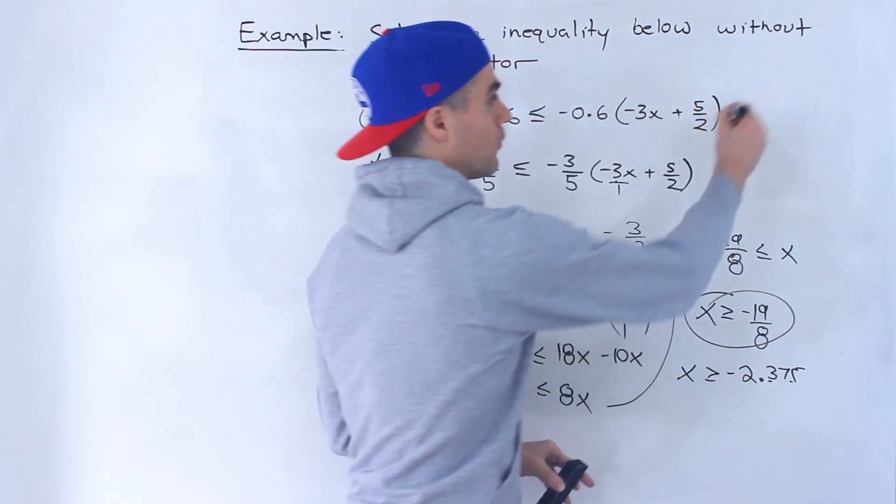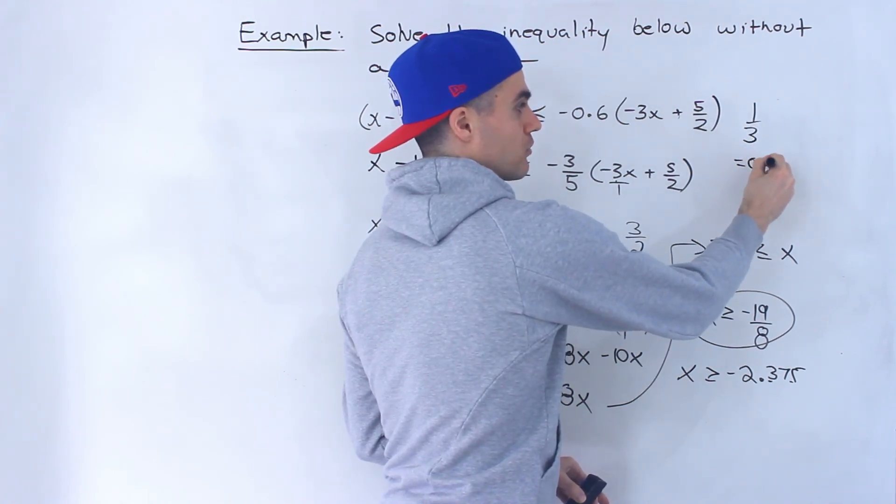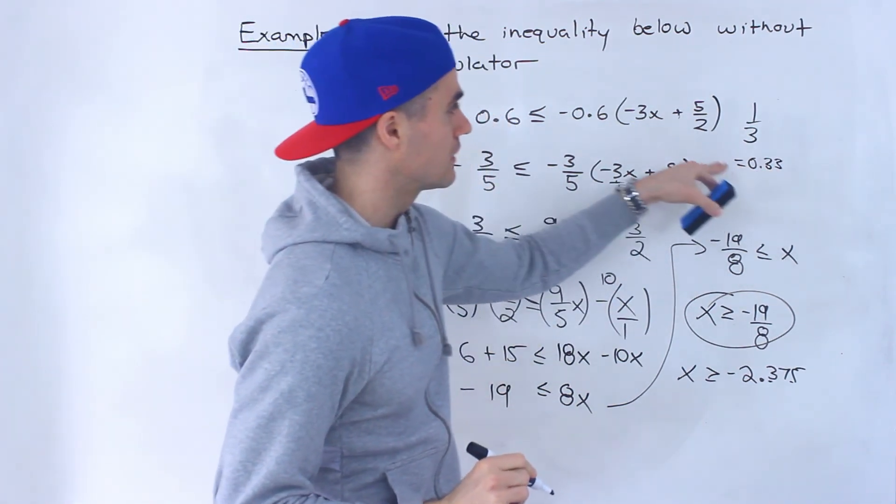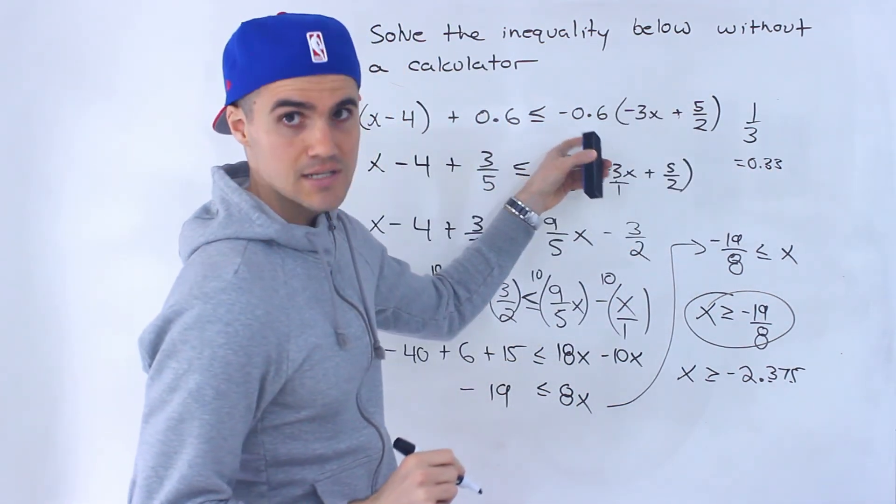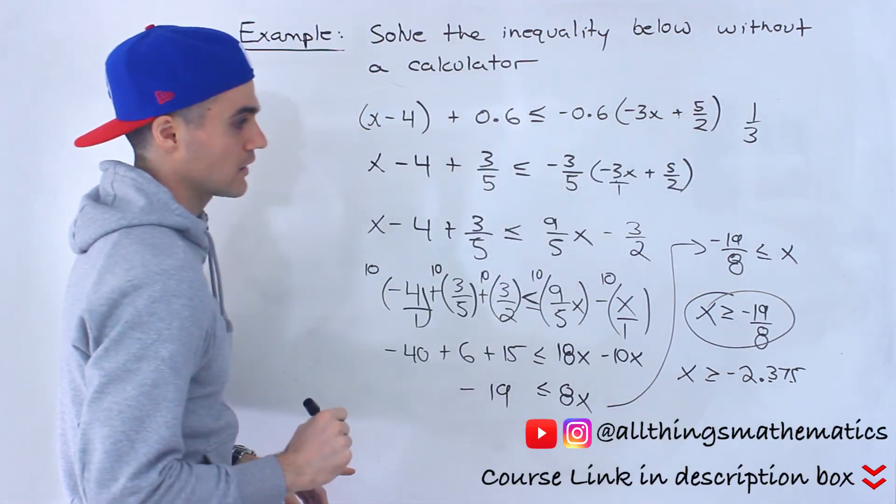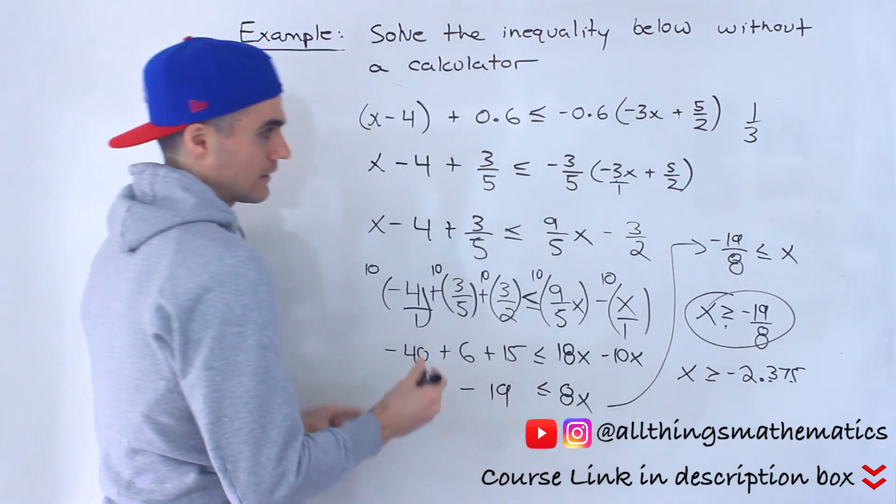And what if this was like 1 over 3? How do we convert that to decimals? Because that 0.33 keeps repeating forever. So for those repeating kind of decimals, I think it's just easier to use fractions whenever you're doing something like this without a calculator. All right? So that there ends up being the final answer.